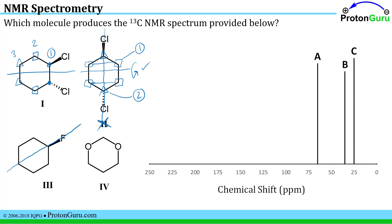If I look at example three, I see a symmetry axis here. So I have one signal, two signals, three signals, four signals — that's too many signals. If I look at example four, I see a plane of symmetry here. I would have one signal for the carbon between the oxygens, a second one here, and then these two are related to one another by symmetry, giving me a third signal. So now compounds one and four are still in the running.